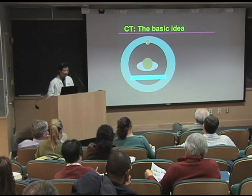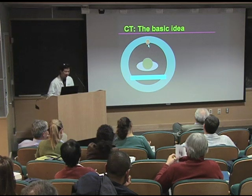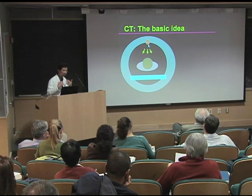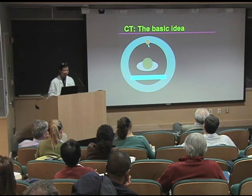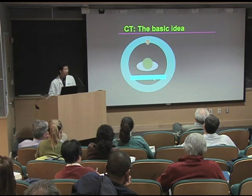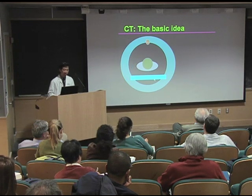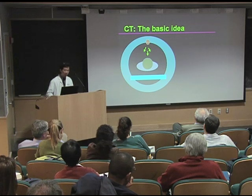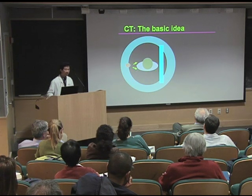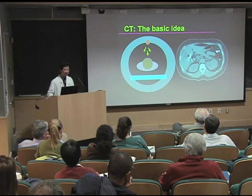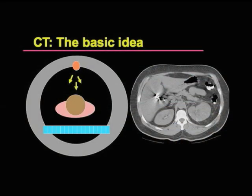Our x-ray source is the orange dot. The x-ray source will send x-rays through the patient to a row of detectors behind the patient. And then by circling this x-ray source and the x-ray detector, we can digitally synthesize a cross-sectional slice through the human body that's only a few millimeters thick.